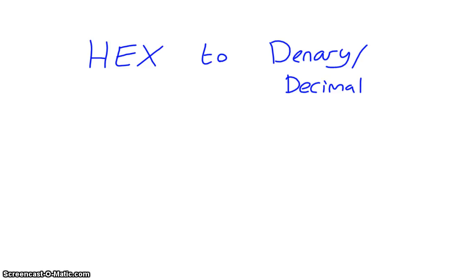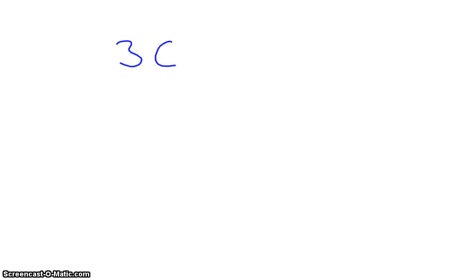This revision video is going to take you through converting hex to denary, sometimes called decimal, or vice versa, going from decimal back to hex. So let's take a hex number, and we might take something like 3C.